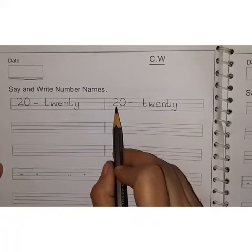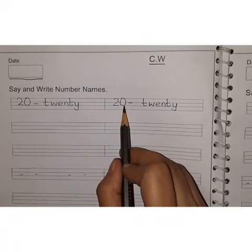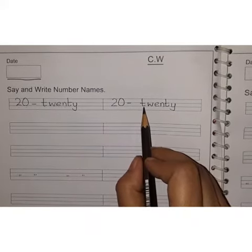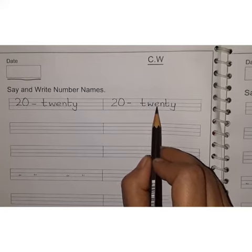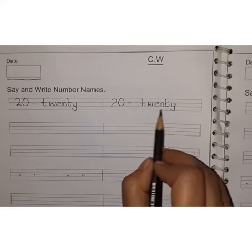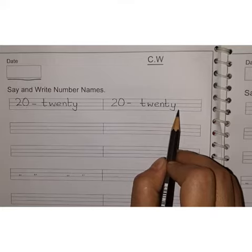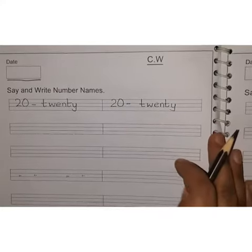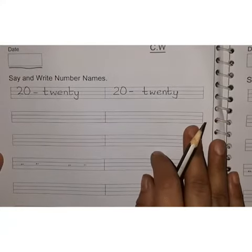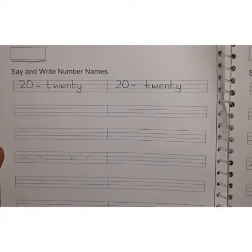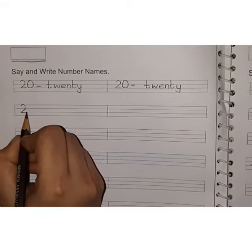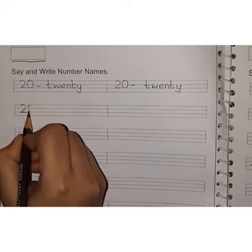2, 0, 20. And the spelling is T-W-E-N-T-Y, 20. Let's write now. Write the number here first: 2, 0, 20.